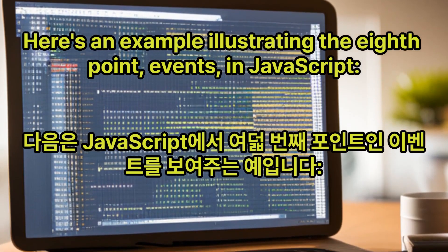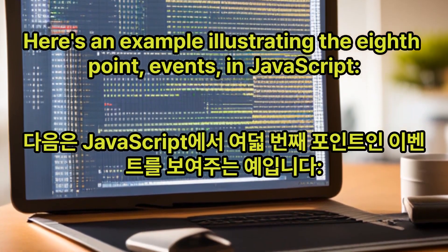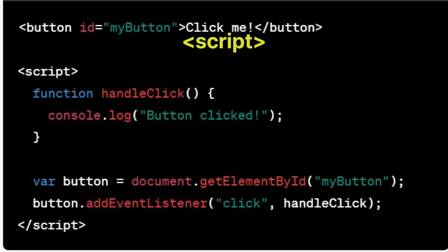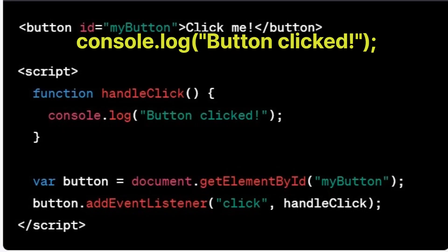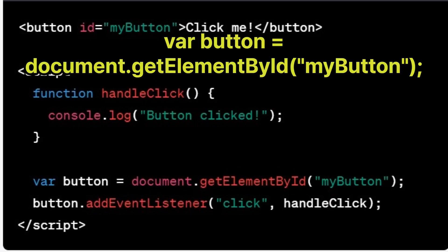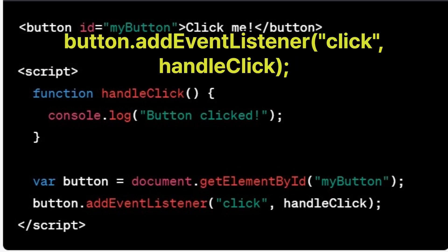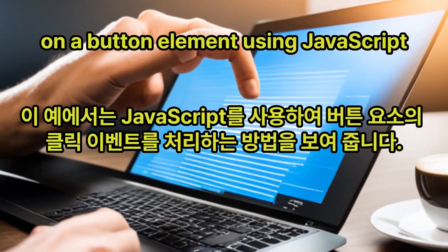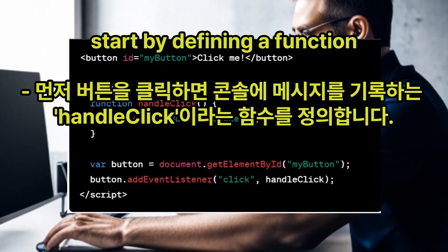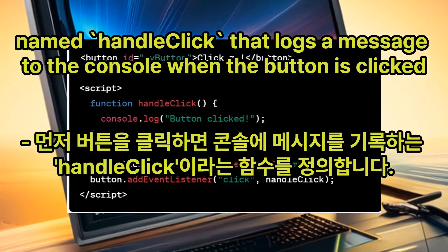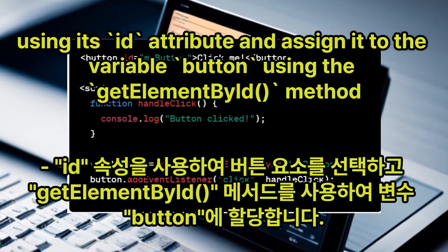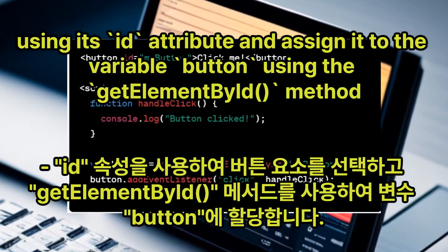Here's an example illustrating the eighth point, events, in JavaScript. In HTML: <button id='myButton'>Click me</button>. In script: function handleClick() { console.log('Button clicked'); } var button = document.getElementById('myButton'); button.addEventListener('click', handleClick). In this example, we demonstrate how to handle a click event on a button element using JavaScript. We define a function named handleClick that logs a message to the console when the button is clicked. We select the button element using its id attribute with the getElementById method, then use addEventListener to attach an event listener.